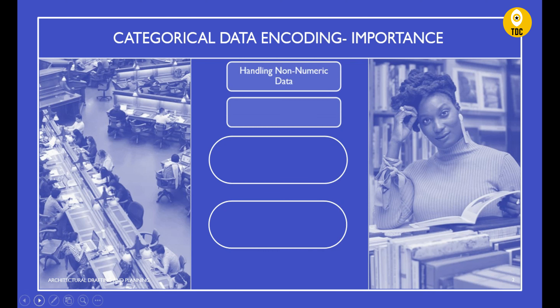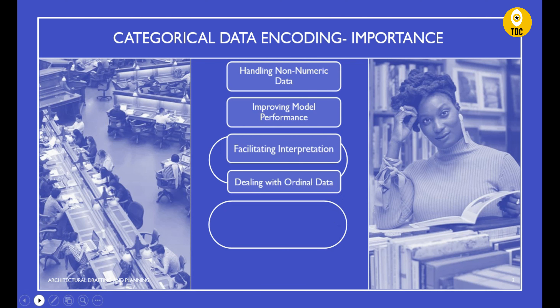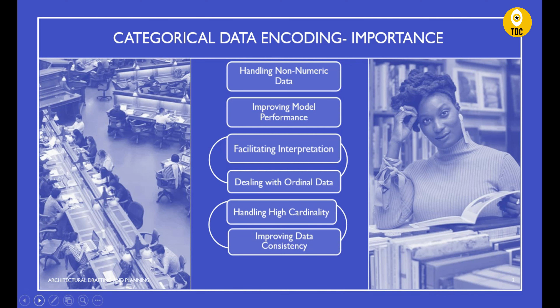These are the key points on the importance of categorical data encoding. The main purpose of doing categorical data encoding is data pre-processing. Data encoding is a crucial and fundamental step when you are doing data pre-processing.